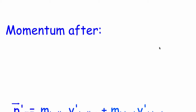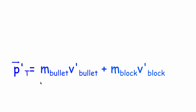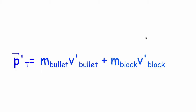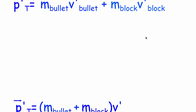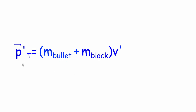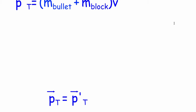Now after the interaction, let's take a look at the momentum. Momentum after the collision is the mass of the bullet times the new speed of the bullet plus the mass of the block times the new speed of the block. Because the bullet and the block are actually moving at the same speed, we can simplify it slightly and say that momentum after the bullet goes into the block of wood is just the mass of the bullet plus the mass of the block, times their new combined speed.